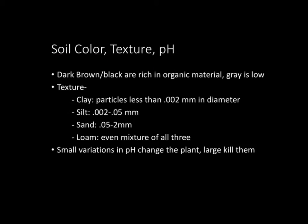Soil color, texture, and pH. A dark brown or black soil tends to be rich in organic material, while a gray or pale soil is going to be low in organic material. When looking at texture, there are three main types. Clay has the smallest particles — .002 millimeters in diameter — which is why it's very dense and you can't see individual particles. Silt particles are between .002 and .05 millimeters in diameter. And the largest is sand, at .05 to 2 millimeters in diameter — that's why you can see individual grains of sand on a beach, whereas you wouldn't be able to see individual grains of clay.